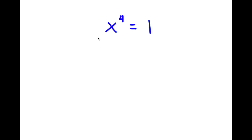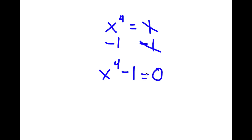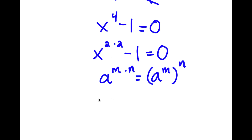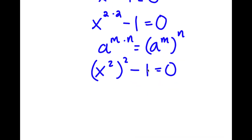So in this problem, I have x to the power of 4 is equal to 1. I'm going to start by subtracting 1 on both sides, so these two cancel out, and I get x to the power of 4 minus 1 is equal to 0. Now x to the power of 4 I can rewrite as x to the power of 2 times 2, and using the exponent rule a^(m·n) = (a^m)^n, I can rewrite this as x squared to the power of 2. So I have x squared to the power of 2 minus 1 squared is equal to 0.